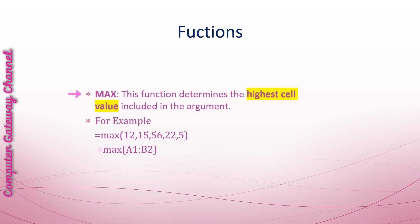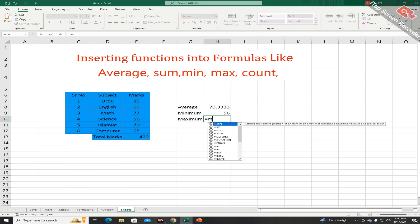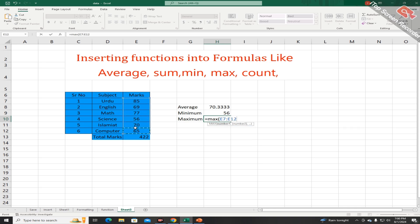MAX function. This function determines the highest cell value included in the argument. In the first example, the MAX function returns the highest value 56. In the second example, it calculates the highest value from the range A1 to B2. To find the maximum marks, use the MAX function: equal sign, MAX, then give the cell address — and this is the result.